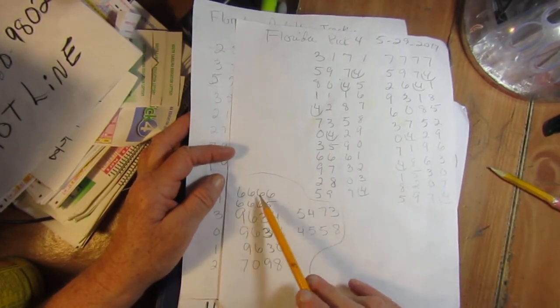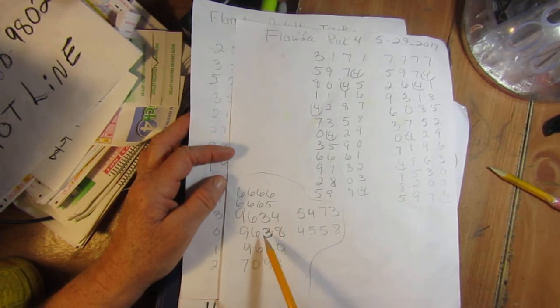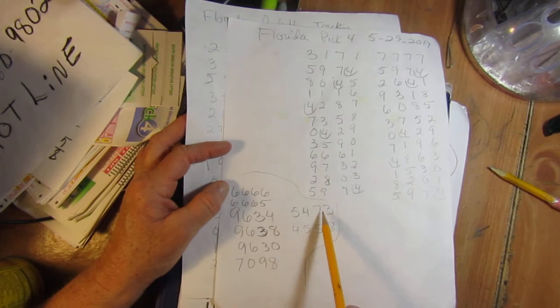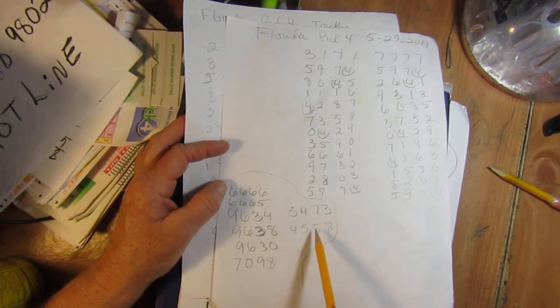We have 666, 665, 9634, 9638, 9630, 7098, 5473 and 4558. That's what I'm playing for tonight.